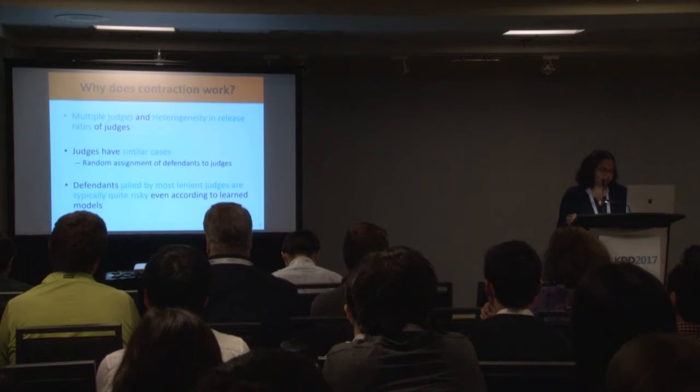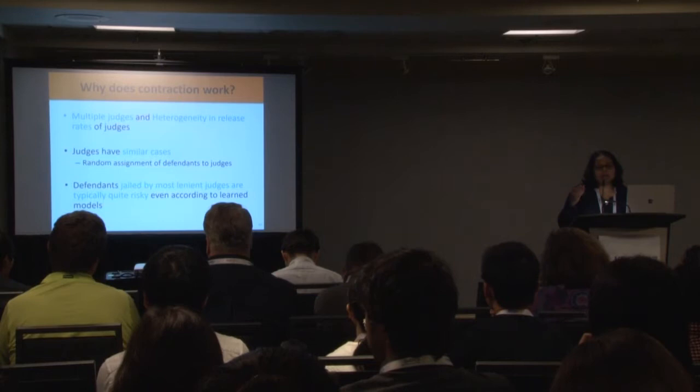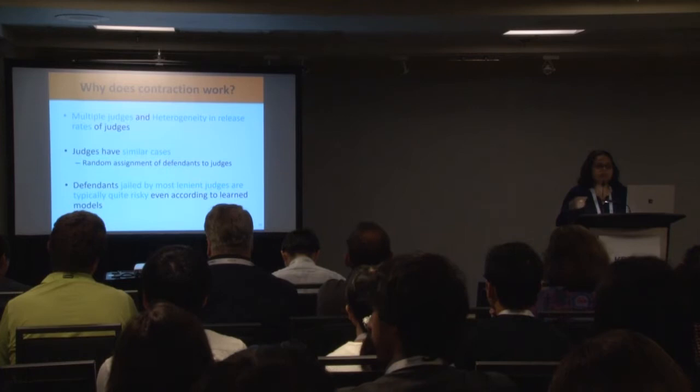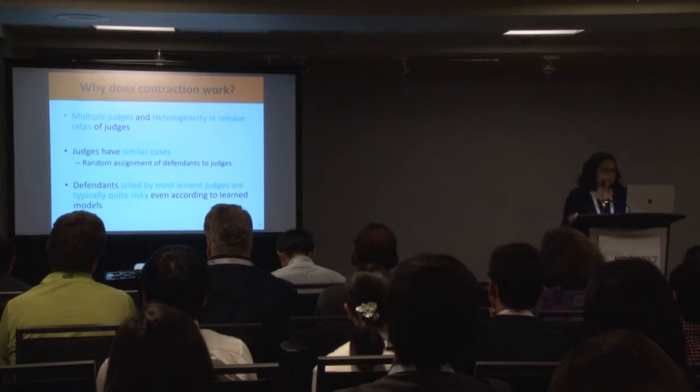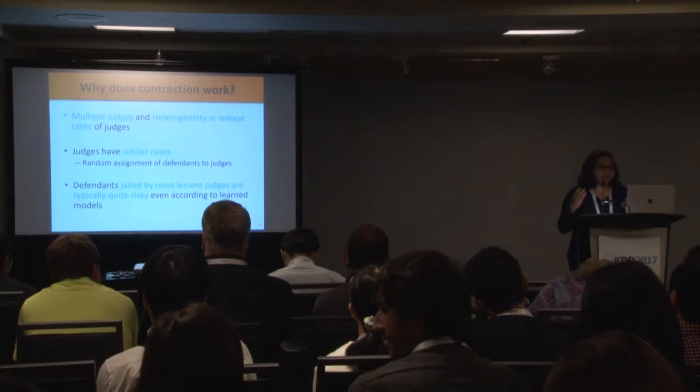Let me discuss the underlying assumptions. First, we assume there are multiple judges with heterogeneity in release rates — not all judges release the same fraction. The second key assumption is that judges have similar cases; otherwise it is not feasible to compare two sets with different underlying distributions. In some sense, we are assuming defendants are randomly assigned to judges.